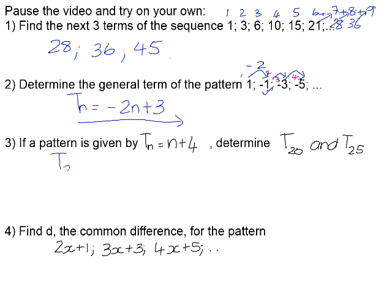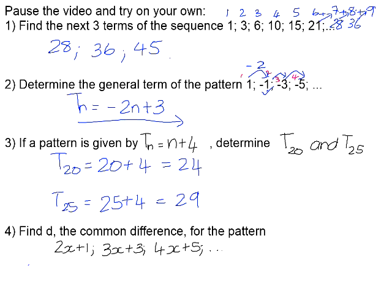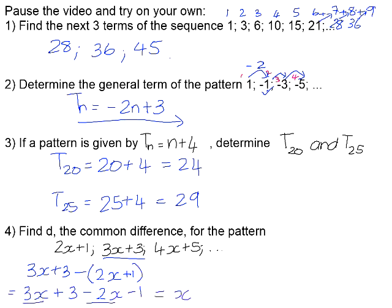Number 3: find T20 and T25 given the general term T(N) = N + 4. Term 20: 20 + 4 = 24. Term 25: 25 + 4 = 29. Number 4, something a little different: find D, the common difference for the pattern. Remember the common difference is a term subtract the term before it. So that gives us (3x + 3) − (2x − 1). 3x − 2x = x, and positive 3 subtract negative 1 is positive 4 — wait, 3 − (−1) = positive 4... The result is D = x + 4.